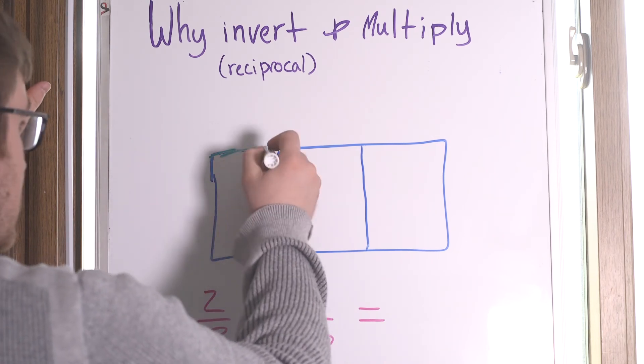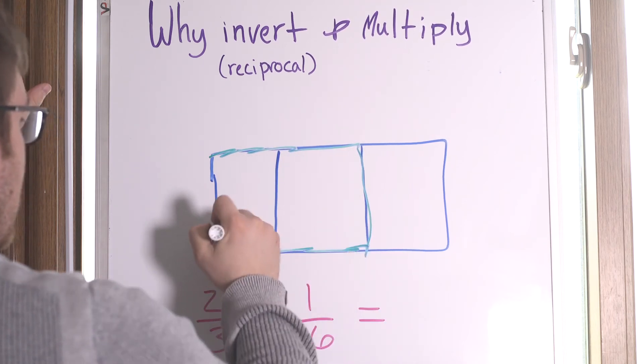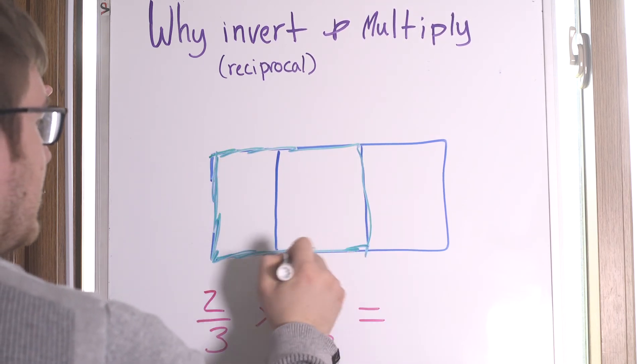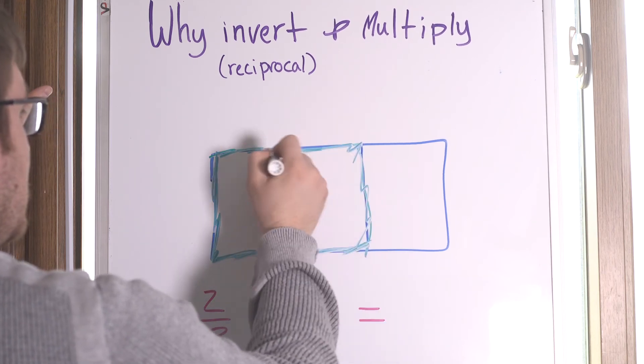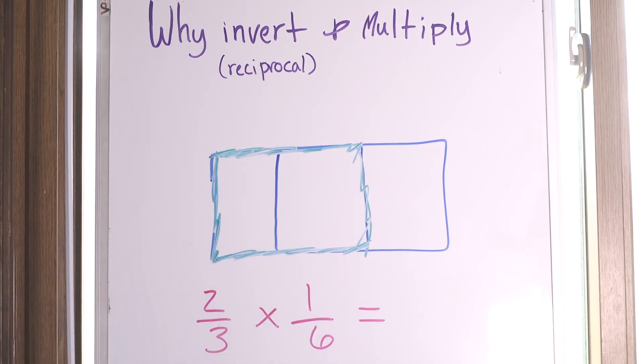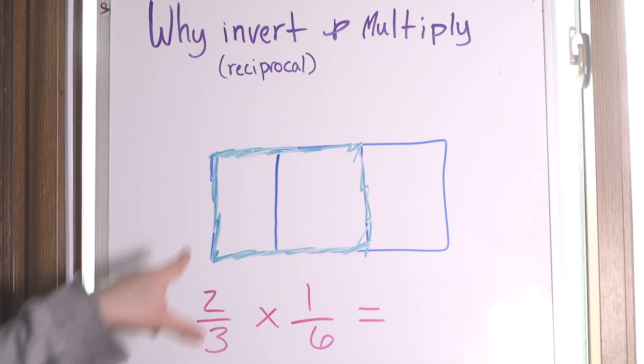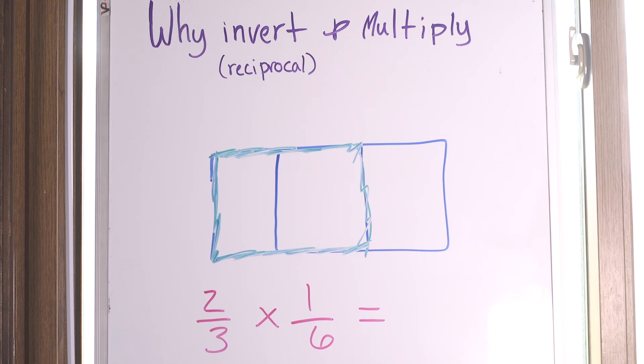Okay. So here's my two thirds of the candy bar. Just like last time, I'm going to sort of highlight the outside in green. So there's my two thirds of my candy bar and it's saying, okay, of that two thirds, of this two thirds, give me a sixth, give me a sixth of that candy bar.